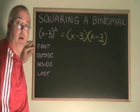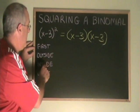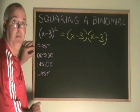At this point, we are just multiplying two binomials. We can use the FOIL: first, outside, inside, last, to simplify this.